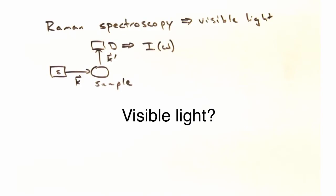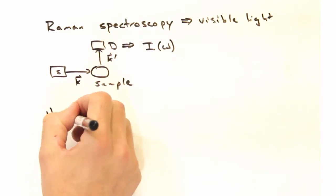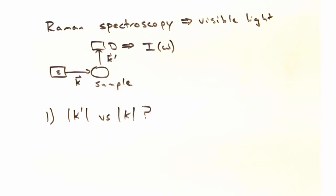Right away when I say visible light, the first thing that should come into your head is, well this is weird because I thought that elastic scattering and visible light were incompatible, because delta k could never get out to a capital G vector.